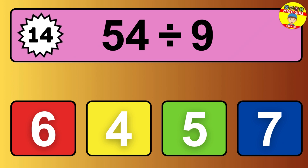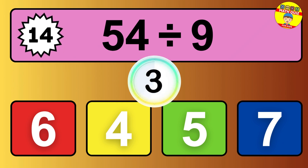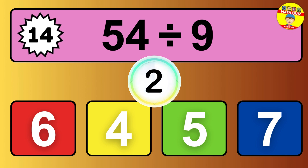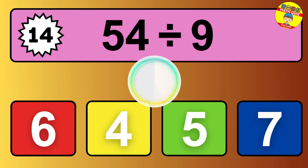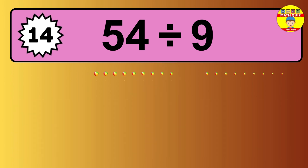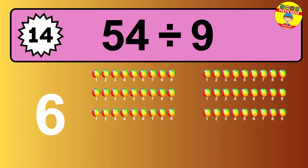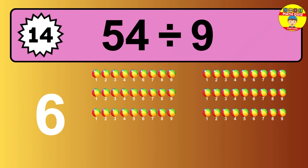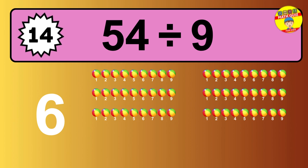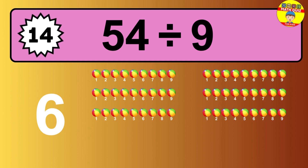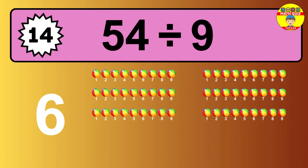54 divided by 9 — time to think. Let's go to the solution. Divide the number 54 by 9. Each group contains 9 units, so dividing 54 by 9 results in 6 equal groups. Thus, the result is 54 divided by 9 equals 6.